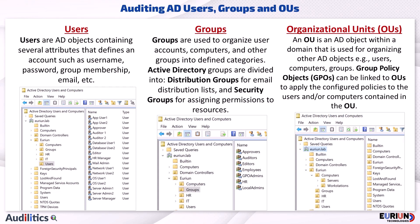Groups are used to organize user accounts, computers, and other groups into defined categories. Active Directory groups are divided into distribution groups for email distribution lists and security groups for assigning permissions to resources.